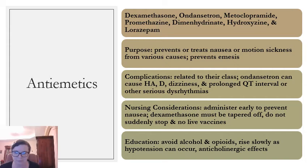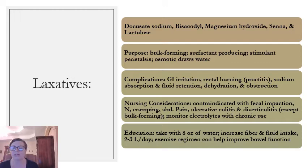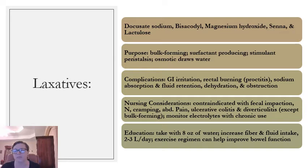Laxatives include docusate sodium (commonly used for opioid-induced constipation or post-surgery), bisacodyl, magnesium hydroxide, senna (for chronic opioid use), and lactulose (used in liver patients or those with hyperkalemia to promote bowel movements and remove unwanted electrolytes like potassium and bilirubin quickly). Laxative types include bulk-forming, surfactant-producing, stimulating peristalsis, and osmotic — which draws water into the GI tract to dilute and soften stool.